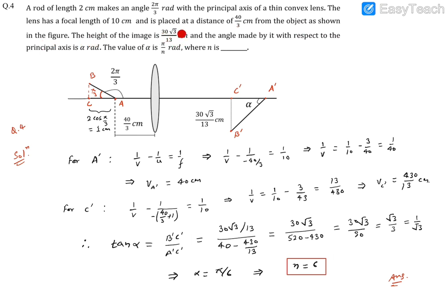The height of the image is 30√3/13 centimeters, and the angle made by it with respect to the principal axis is α radians. We need to find α = π/n, so we need to find this number n.